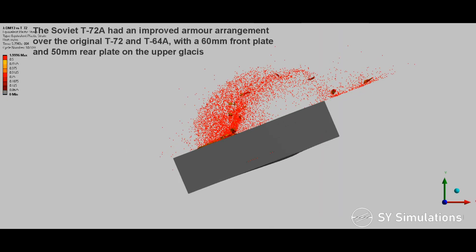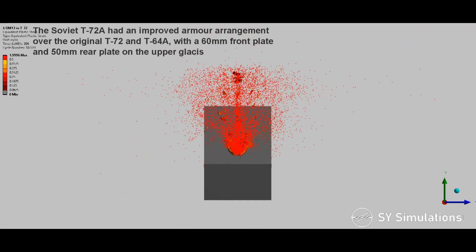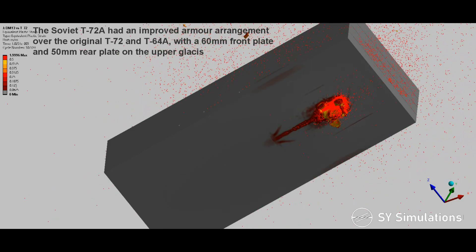The Soviet T-72A had an improved armor arrangement over the original T-72 and the T-64A, with a 60mm front plate and 50mm rear plate on the upper glacis.